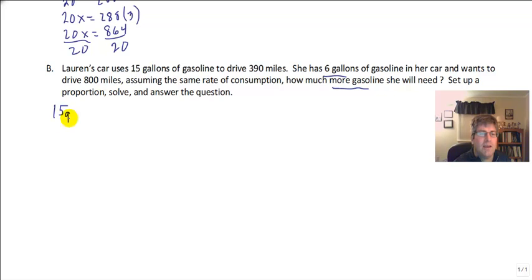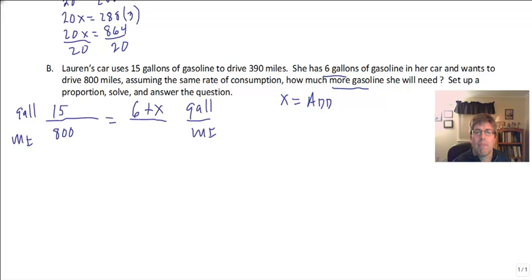Well, I know that 15 gallons will get me 800 miles. So 15 will get me 800. So I have gallons is to miles as gallons will be to miles. Well, she already has 6 gallons. We want to know how many more. So that is 6 plus x. So x is the additional gallons of gas that Lauren will need.